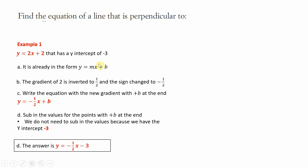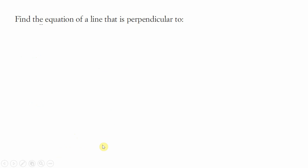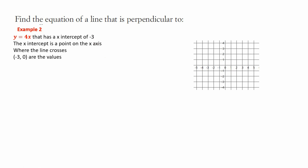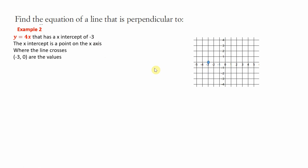That is perpendicular to the original line. Next example: perpendicular to y equals 4x, and it has an x-intercept of minus 3. Just to remind us, the x-intercept means the line crosses at that point, which has the coordinates negative 3, 0. Those are the coordinates we'll sub into the equation.